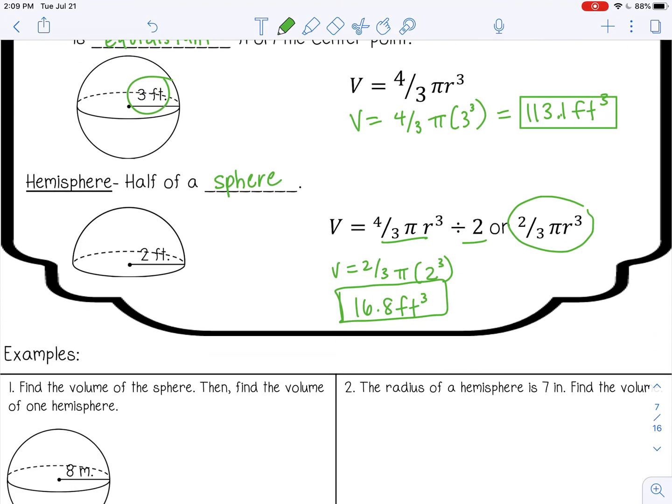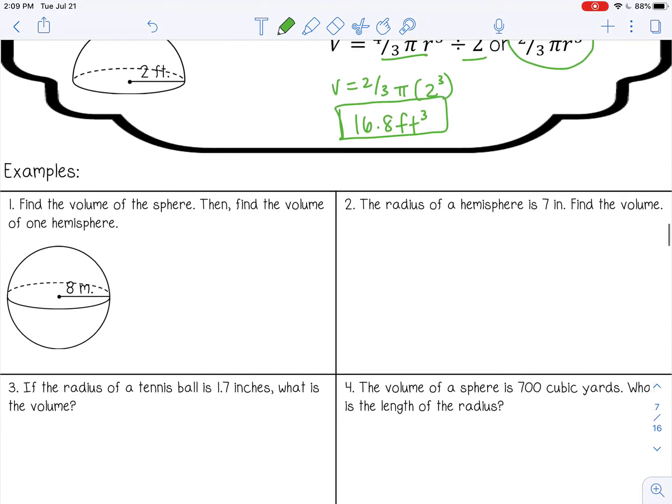Let's try some examples. Number one says to find the volume of the sphere, then find the volume of one hemisphere. So our radius is eight, so four thirds pi eight cubed. And I get about 2,144.7 meters cubed.